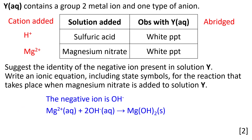The negative ion is hydroxide, OH−. The balanced ionic equation is also given there. Once again, state symbols are essential as they show that a precipitate — a solid product — is formed.